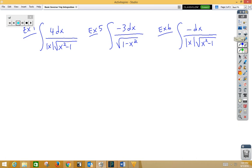In example 4, we have a 4 that's in our way, but we can go ahead and slip that outside. We get 4 integral 1 over absolute value of x, root x squared minus 1.